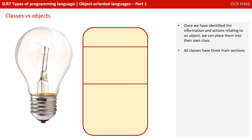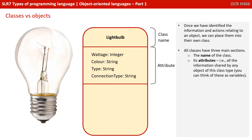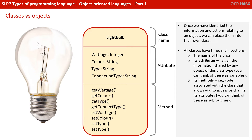Once we've identified the information and actions relating to an object, we can place them into what's called their own class. Now, all classes have three main sections: the name of the class, its attributes — all the information shared by any object of this class type, which you can loosely think of as the item's variables — and also its methods, which is any code associated with the class that allows you to access or change its attributes. You could think of these roughly as subroutines.